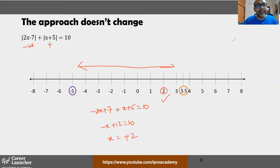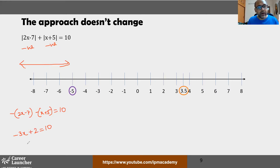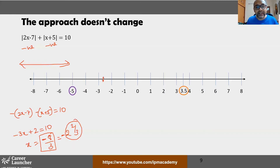For the third region (x < −5), take x = −10: both moduli are negative. The equation becomes −(2x − 7) − (x + 5) = 10, giving −3x + 2 = 10, so x = −8/3 ≈ −2.67. But −2.67 is NOT in the region x < −5, so this answer is rejected. Final answers: x = 2 and x = 4.